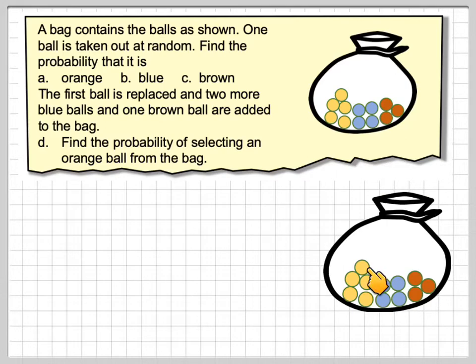First, find the total number of balls in the bag. We can see there's five, four, three, which makes 12 balls altogether. So the probabilities will be out of 12.